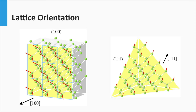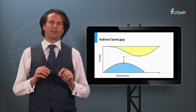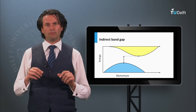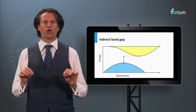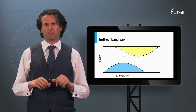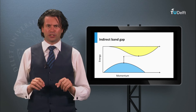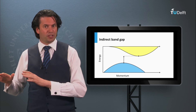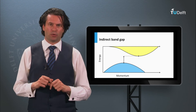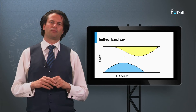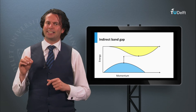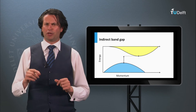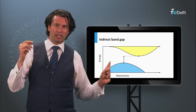Why are these directions important? As we discussed in week 3, we have direct and indirect band gap materials. This can be expressed in the so-called electronic band dispersion diagram. On the vertical axis you have the energy position of the valence and conduction band, and on the horizontal axis the crystal momentum, or in other words the momentum of the charge carriers. To be excited into the conduction band, charge carriers in an indirect band gap material require a change in both energy and momentum.